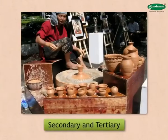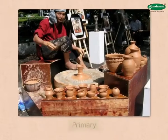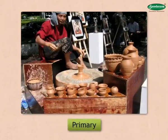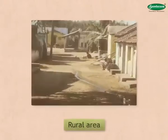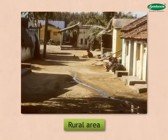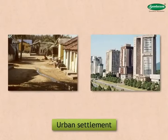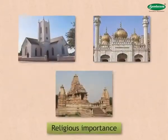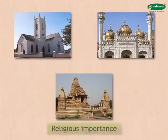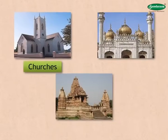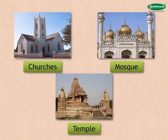As secondary and tertiary occupations increase, the primary occupations decline and gradually the rural area gets transformed into an urban settlement. Such transformation may take place due to religious importance — for example, churches, mosques, and temples.